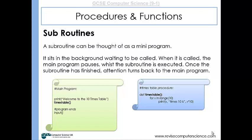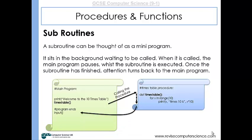The subroutine call will call a subroutine written elsewhere in the program with the name 'times table'. In that subroutine there is a for loop which will loop around and print the 10 times table to the screen. Once the for loop is finished, attention turns back to the main program and the last instruction — an input statement which will pause the program — will be executed. So the procedure is called, run, and we then come back to the main program.